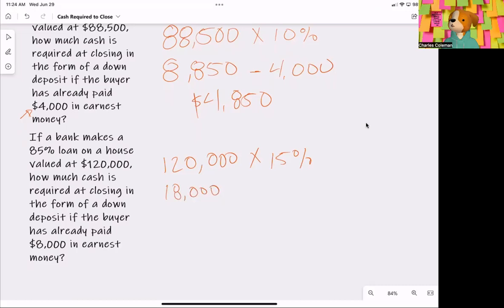And then again, they have already dropped off $8,000 in earnest money. So we're going to take $18,000 and subtract $8,000 from that. And now the buyer is responsible for bringing $10,000.